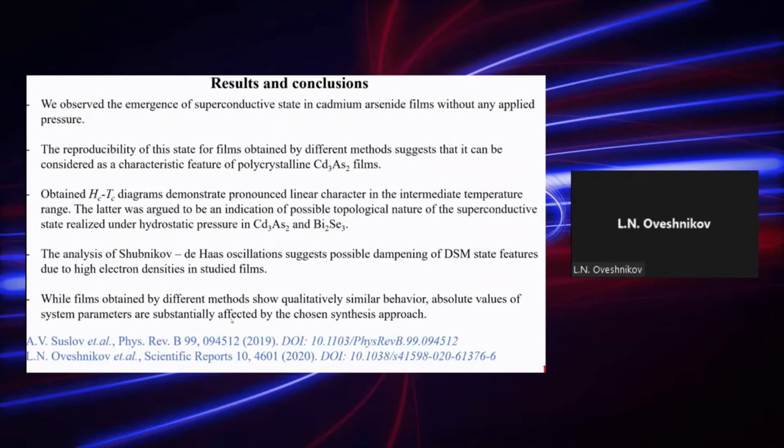we observed these superconductive states, we reproduced it, showing that this is somewhat a universal feature of polycrystalline films. The plotted Bc-Tc diagrams have pronounced linear character in the intermediate temperature range, which can be considered as an indication of possible topological nature of this superconductive state. And the magnetic transport studies also showed that the original Dirac semimetal phase can be gapped in these films due to high electron densities. And while all films show the very qualitatively similar behavior, the actual parameter values strongly depends on the chosen synthesis approach.